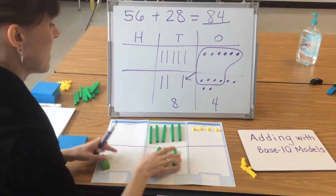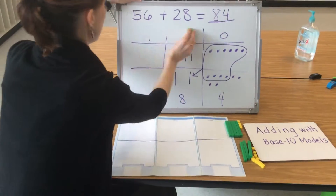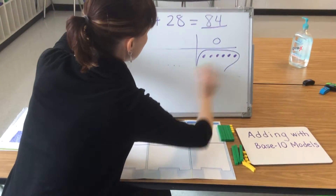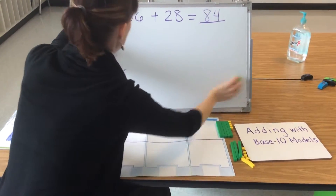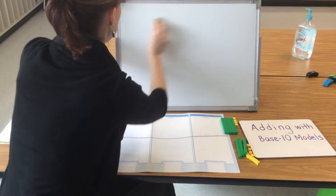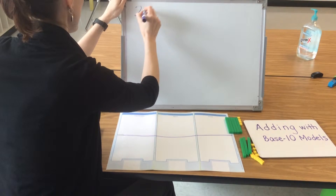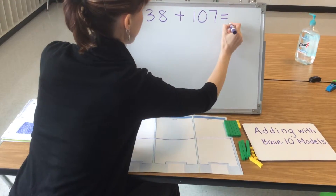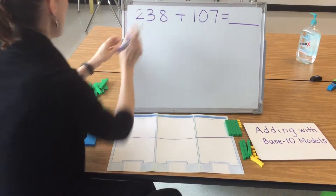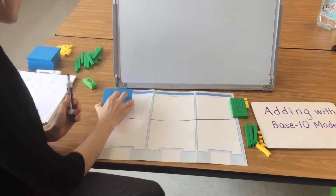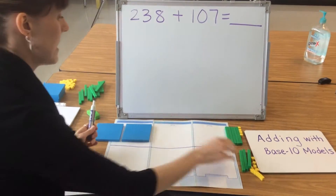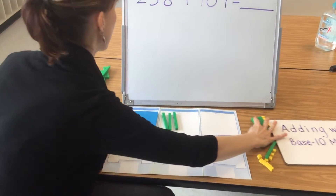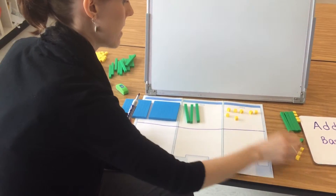Now let's try a problem that has some hundreds in it. Let's see how we can solve 238 plus 107. 238 starts off with two 100s. I need to get my big 100s blocks out, and I need three 10s: 1, 2, 3, and 8 ones: 1, 2, 3, 4, 5, 6, 7, 8.